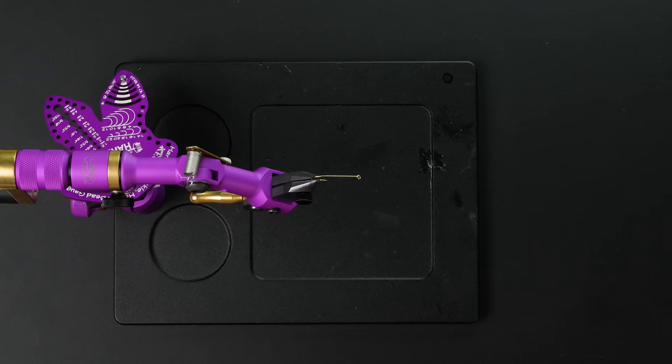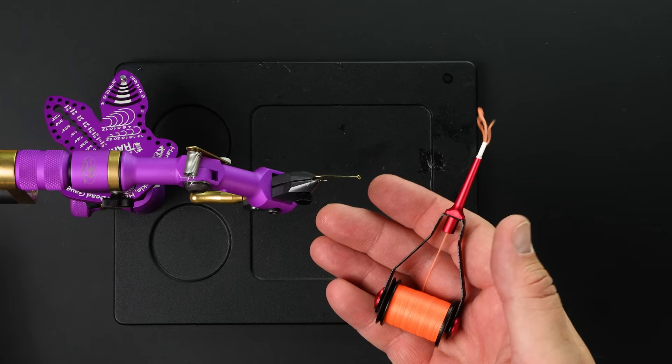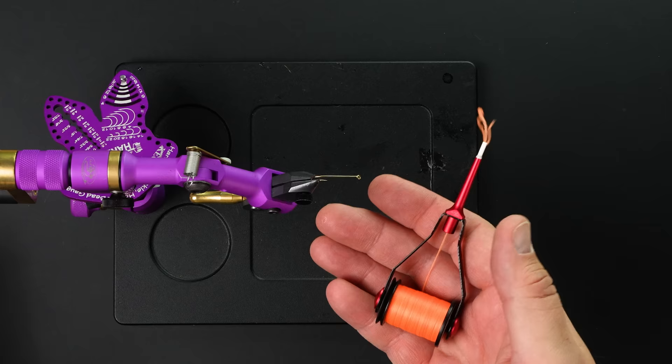We're going to talk about thread control. I've strung up some thread into one of these man bobbins, just a simple squeezable bobbin. It doesn't have a clutch or anything. And there are a few things that you can do to have much better control over your thread when you're tying. First things first, it's how you hold the bobbin.